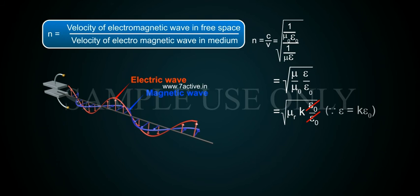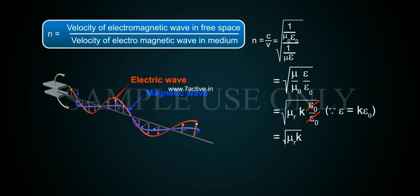Since epsilon equals k epsilon0, the epsilon0 terms cancel. This gives the square root of mu_r times k. And since mu_r equals 1 for most media, N equals the square root of k.